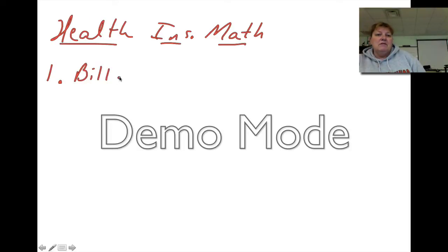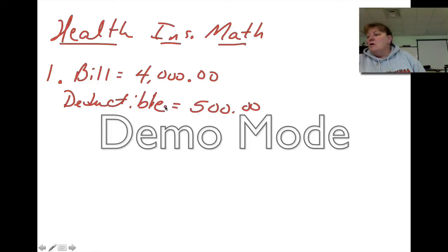I like this insurance math. It's a little hard being left-handed. So number one says, how much does the health insurance company pay if a person has a $4,000 hospital bill and a $500 deductible? Let's look at number one. We have a bill, my bill is $4,000, and I have a deductible of $500.